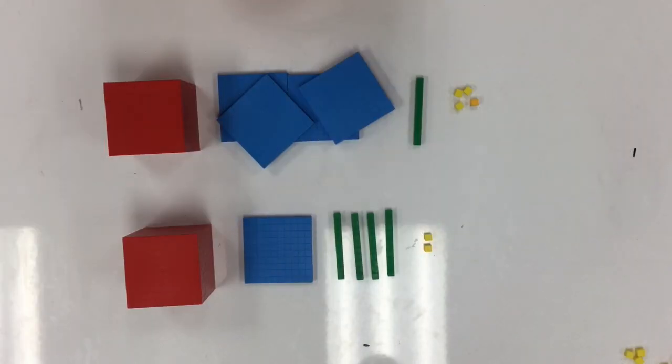Here you can see we've made two different numbers. On the top, we've got 1,414 and on the bottom, we've got 1,142. So how can we tell which number's greatest value when both of the thousands numbers are the same?